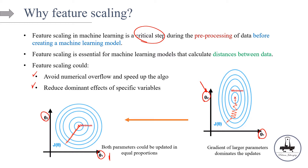In general, remember: if the model incorporates calculating the distance between observations, and also involves using gradient descent in the optimization process, feature scaling is generally going to be helpful.